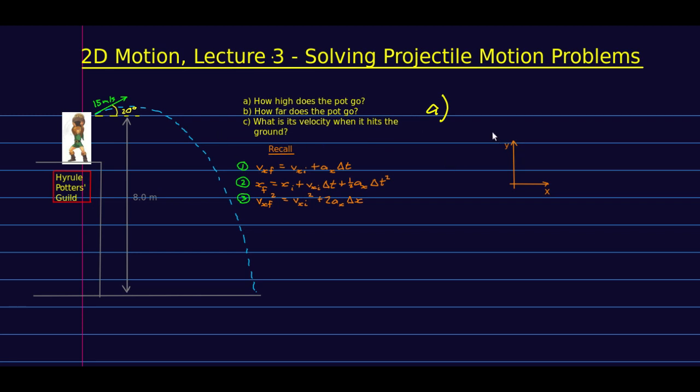The first thing I had better do is define axes. So I've drawn myself some axes over here and I am going to define up as positive for y and right as positive for x, and I am going to put my origin right where the pot starts. That's a choice—I could have put it down at the bottom of the building, I could really put it anywhere, but maybe the sensible places are down at the bottom of the building or right here where the pot starts, and I'm going to choose this one.